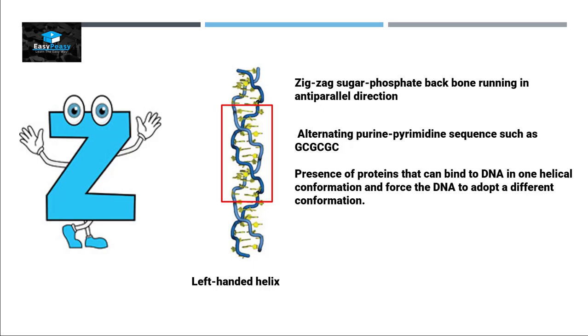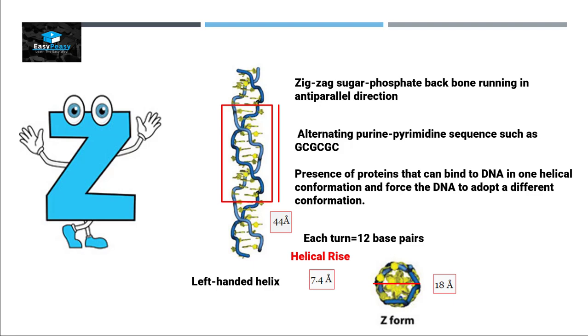Each turn contains approximately 12 base pairs, so it is longer than the B form and A form. The distance of each turn is approximately 44 angstroms. The diameter of the Z form is 18 angstroms, so the diameter of Z form is smaller than B form and A form.